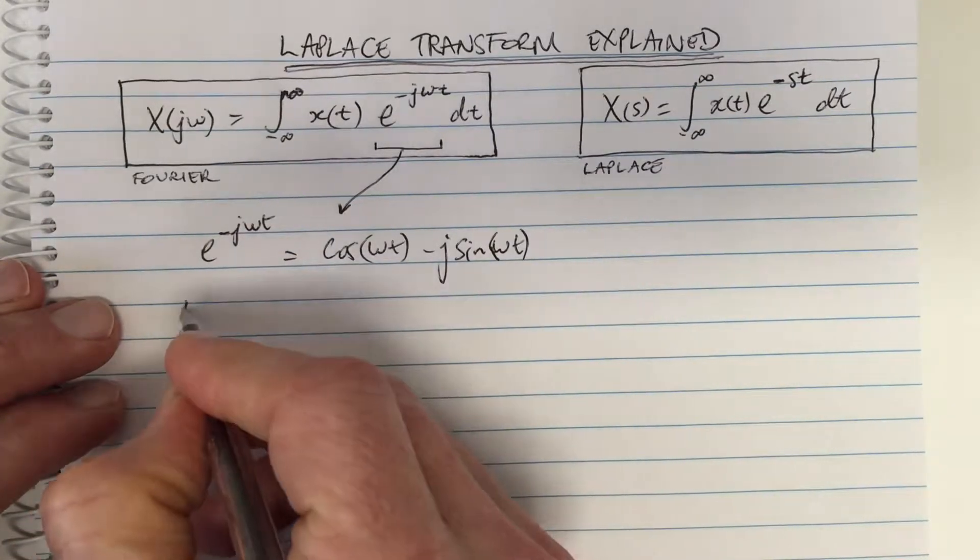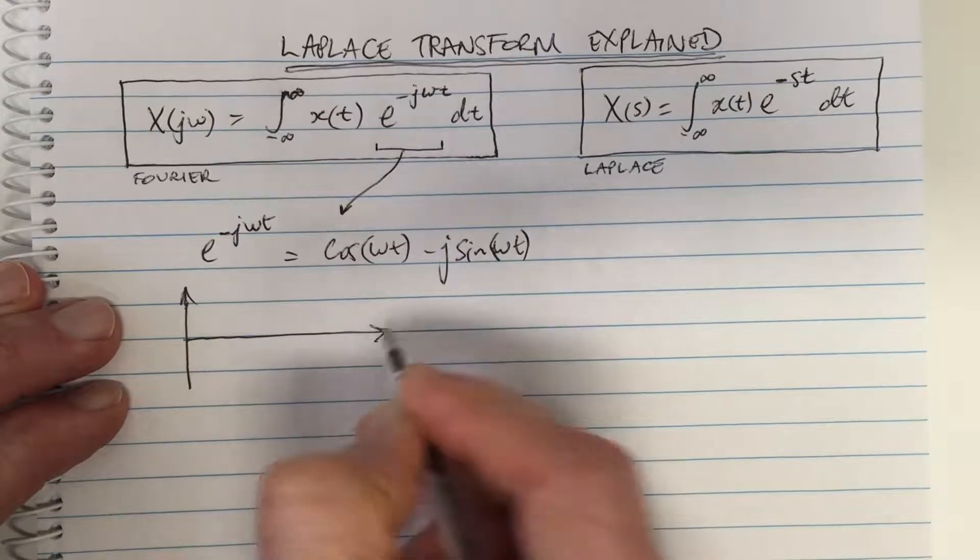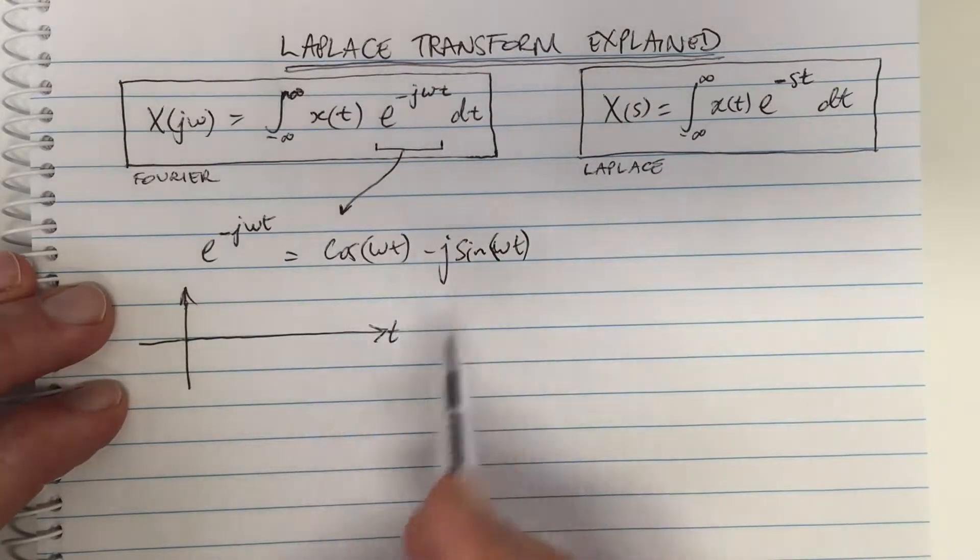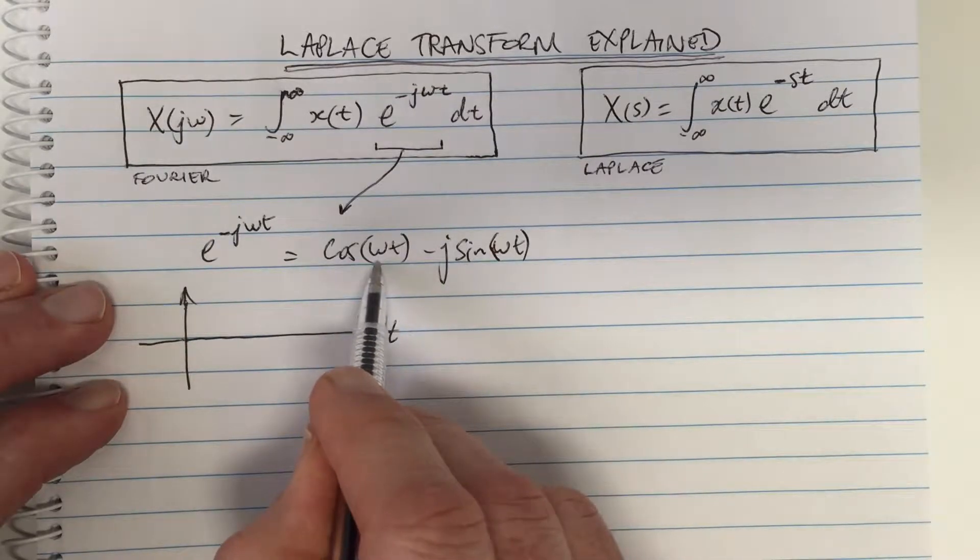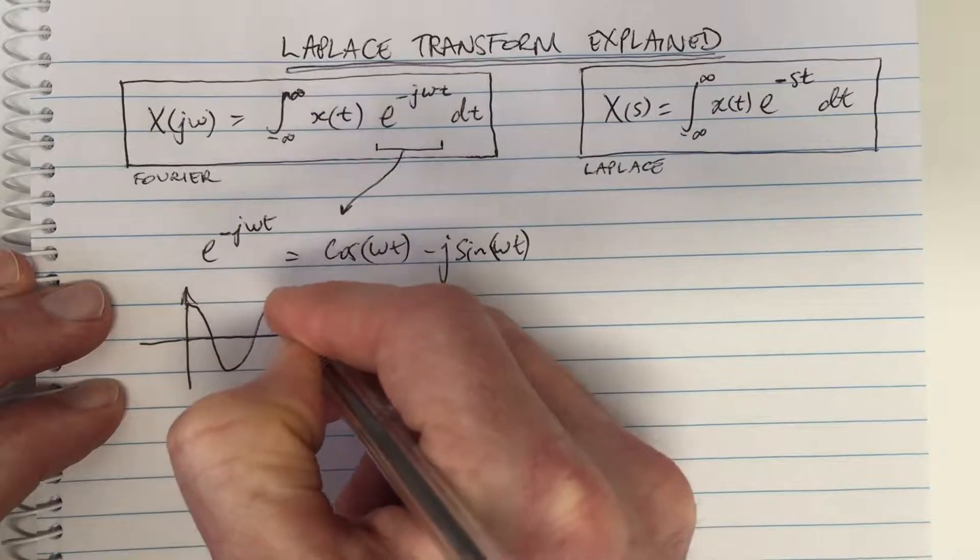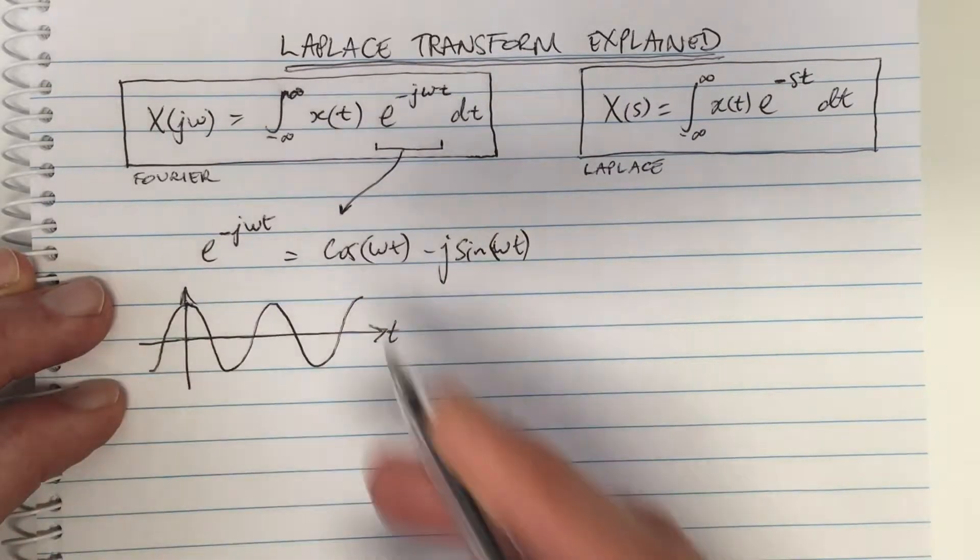I'll just plot the real part, the cosine waveform, so it's a time domain waveform at a particular frequency ω, and it's a cosine waveform. For various different ωs, different values of ω, you'll have different frequencies.